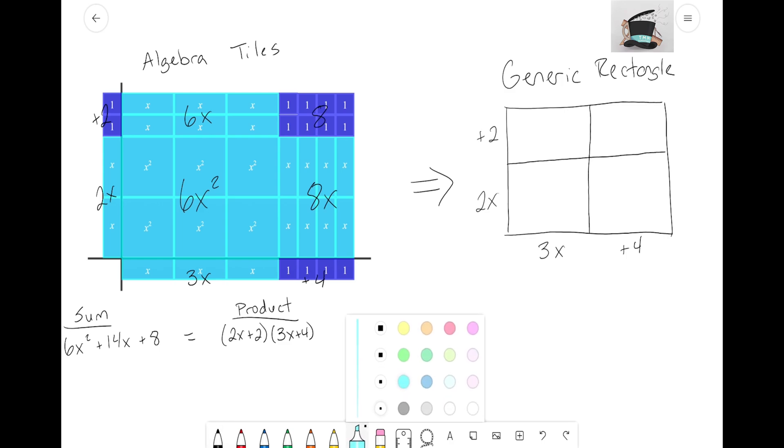And look what happens when I highlight to show what exactly this generic rectangle's coming from. We can start to see that similarity. Hopefully you're starting to see that on the left side here we had two x tiles, and three x tiles on the bottom. When you have 2x and 3x, they form 6x² tiles.